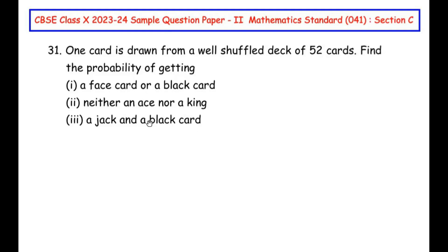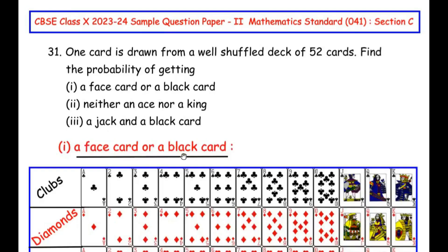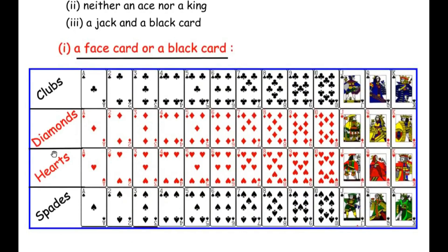Let us solve these questions one by one, starting with the first: a face card or a black card. In a deck of cards there are four suits — clubs, diamonds, hearts, and spades — and each suit has 13 cards, starting from the ace, then two through ten, then the jack, queen, and king. Jack, queen, and king are called face cards. There are total 26 black cards — 13 from clubs and 13 from spades — and 26 red cards — 13 from diamonds and 13 from hearts.